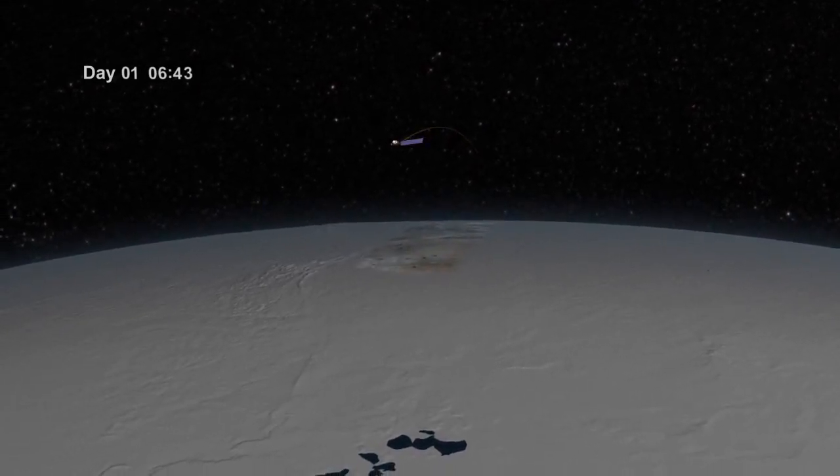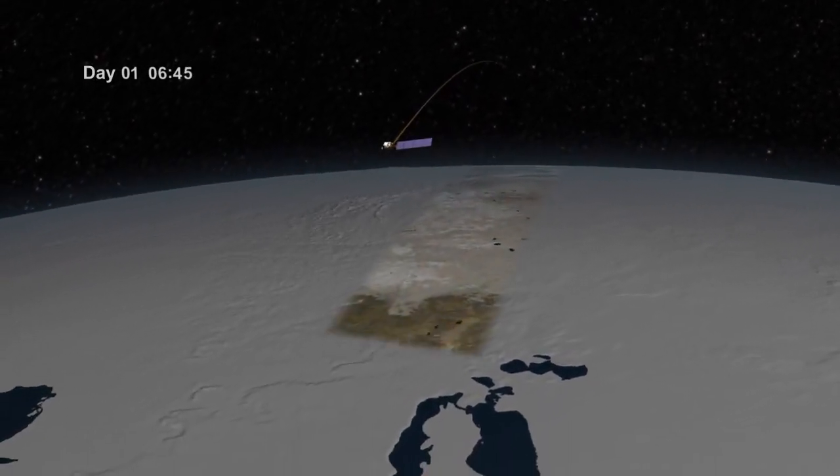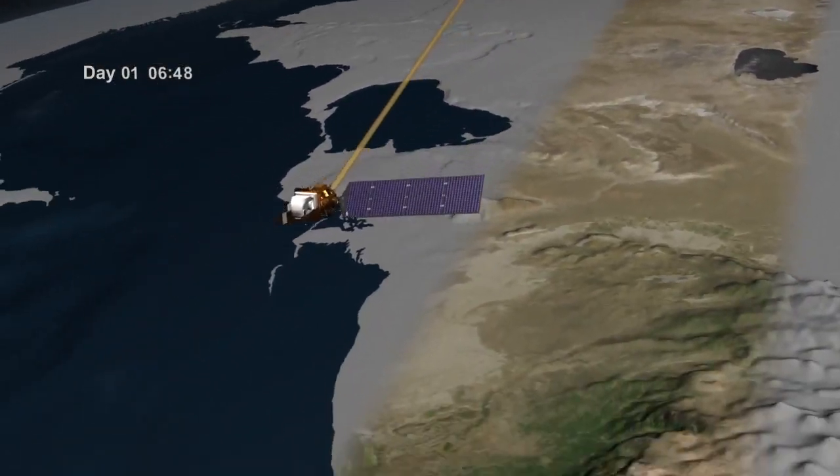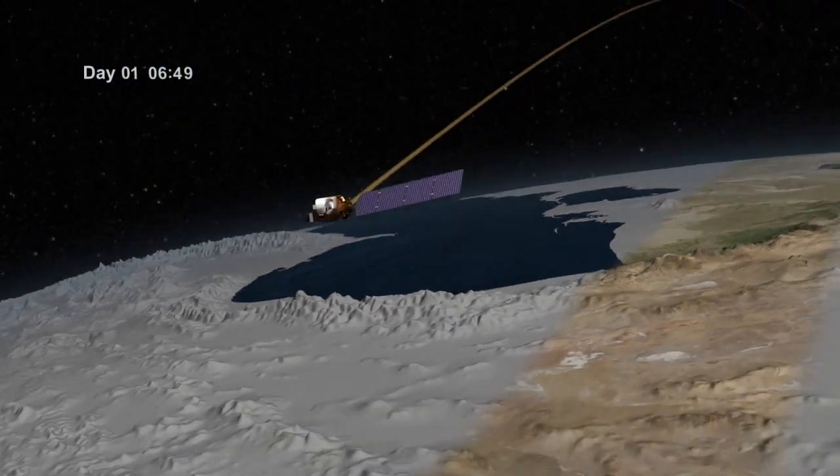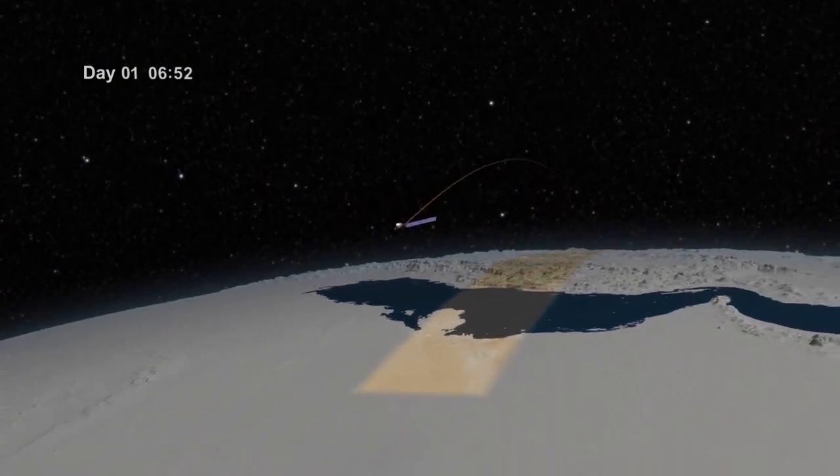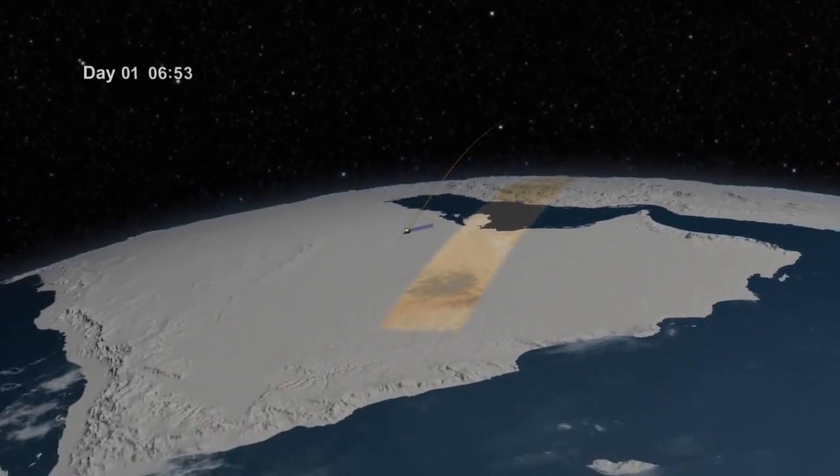As a Landsat satellite flies over the surface of the Earth, the instruments aboard the satellite are able to view a swath 185 kilometers wide and collect images along that swath as the satellite proceeds through its orbit.